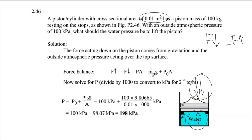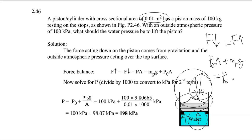The forces acting from the top include the atmospheric force, which equals atmospheric pressure multiplied by the cross-section area of the piston — since pressure is force per unit area, force equals pressure times area. There is also the weight force, which is the piston mass times standard gravitational acceleration. From the bottom, the force is the water pressure multiplied by the piston area.